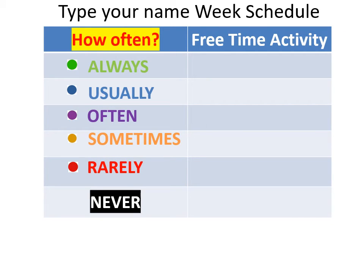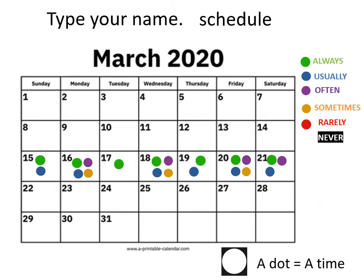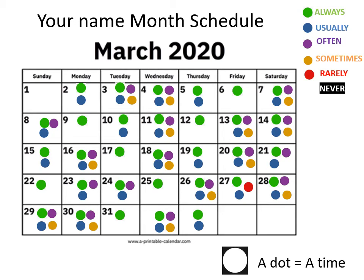Ở slide này các con cần phải gõ vào những hoạt động mà các con làm trong lúc rảnh rỗi. Những hoạt động đó phải trả lời cho: always — các con luôn luôn làm; tiếp đến là usually, often, sometimes, rarely, và never. Hai bảng lịch theo tuần và theo tháng giúp các con nhận ra sự khác biệt giữa cách sử dụng của always, usually, often, sometimes, rarely, và never dựa theo số lượng chấm của mỗi từ.